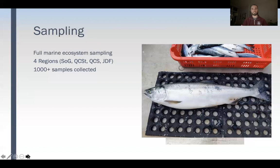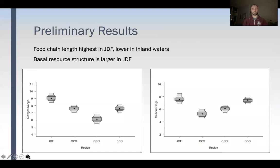After collecting all our data and analyzing for stable isotopes, some of our early results show that food chain length, shown in the nitrogen range, is highest in Juan de Fuca. It gets lower in inland waters with a slight bump in the Strait of Georgia. The basal resource structure, shown on the right graph in the carbon range, is largest in Juan de Fuca, lower in inland waters, but seems to increase with increasing terrestrial inputs.